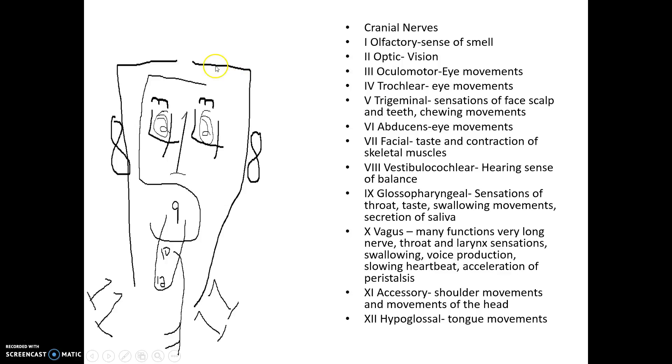Number 7, facial. Notice we outlined the face with this 7 right here and made a backward 7 just to have another portion of the face. Number 8, vestibulocochlear. Cochlear was hearing, so we put our 8s out here where our hearing or ears would be. The vestibulo means that vestibular area we talked about that sends information primarily to our cerebellum and helps us understand and have balance.